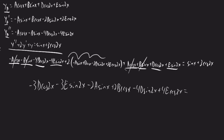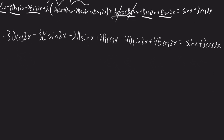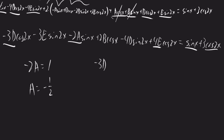We can now compare coefficients. Comparing the coefficients of sine x: on the left we have negative 2a, on the right we have 1, so negative 2a equals 1, giving a equals negative one half. Comparing coefficients of cosine 2x: on the left we have negative 3d plus 4e, on the right we have 3, so negative 3d plus 4e equals 3. Comparing coefficients of sine 2x: on the left we have negative 3e minus 4d, on the right we have 0, so negative 3e minus 4d equals 0.